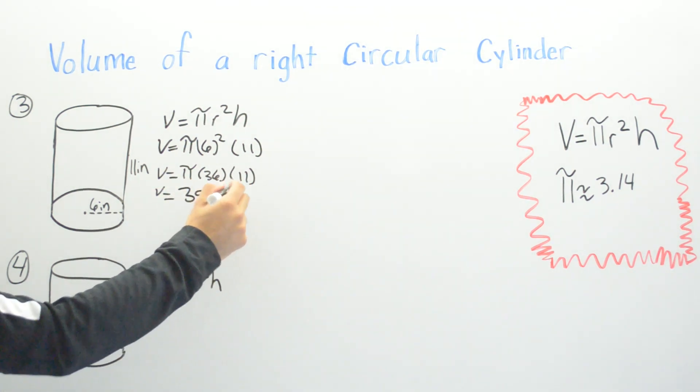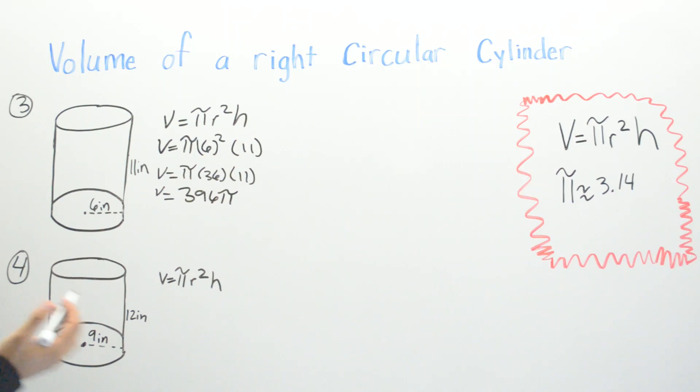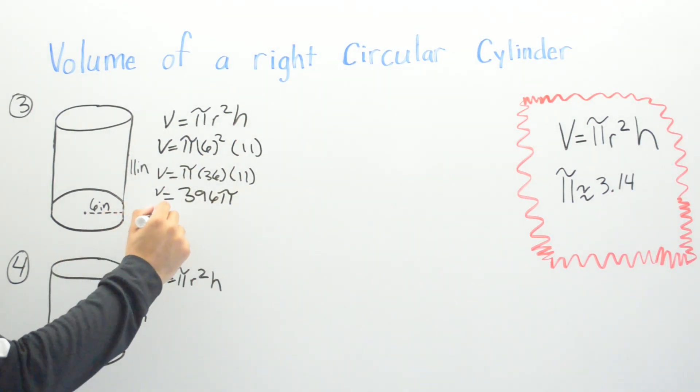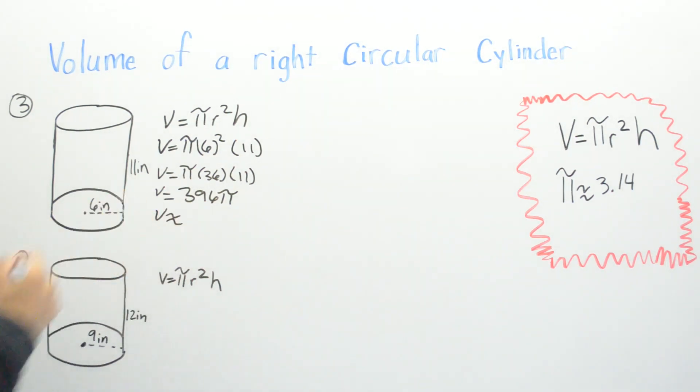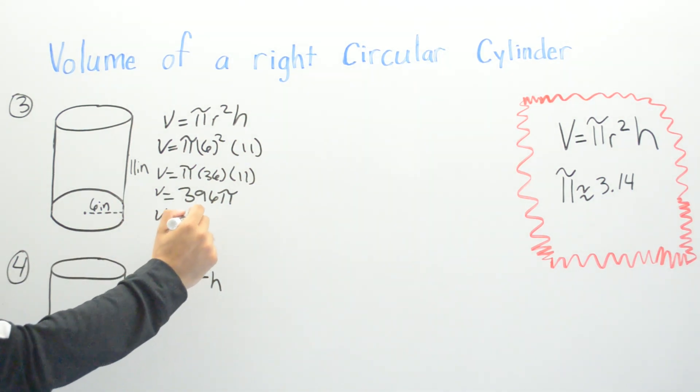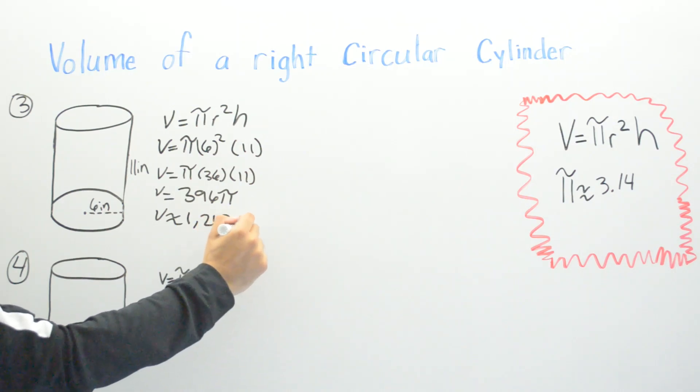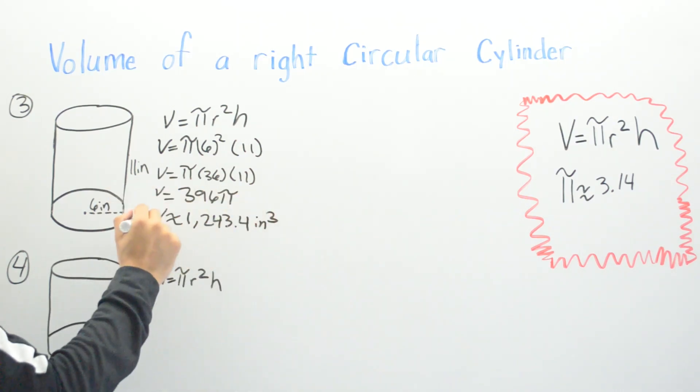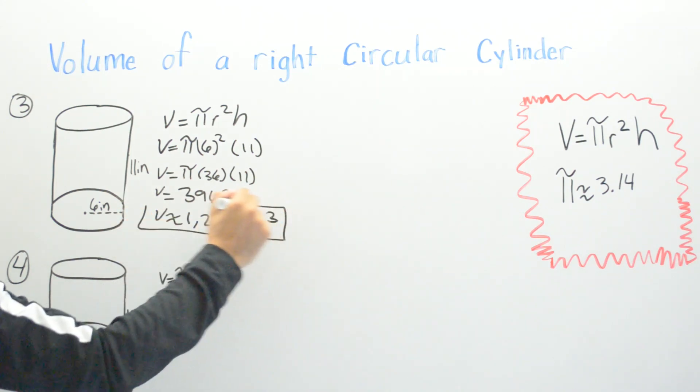And again, you can leave it as pi depending on your teacher or your assignment. Then if you need to do one step further, we go ahead and multiply 396 times 3.14, and our answer is going to be 1243.44. Don't forget our inches cubed.